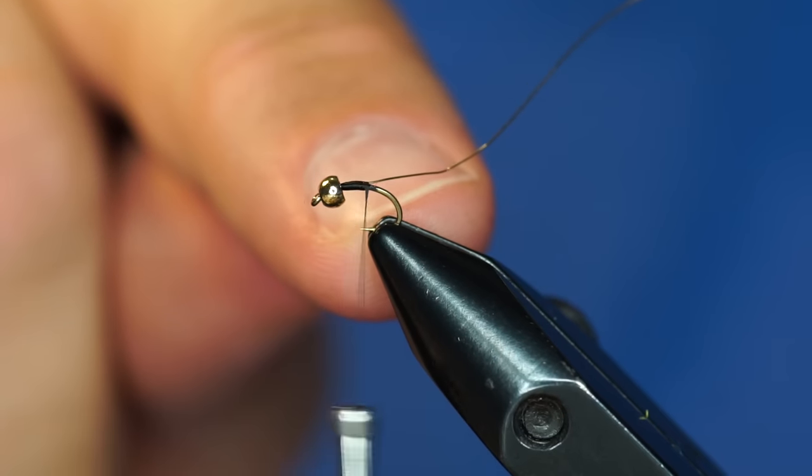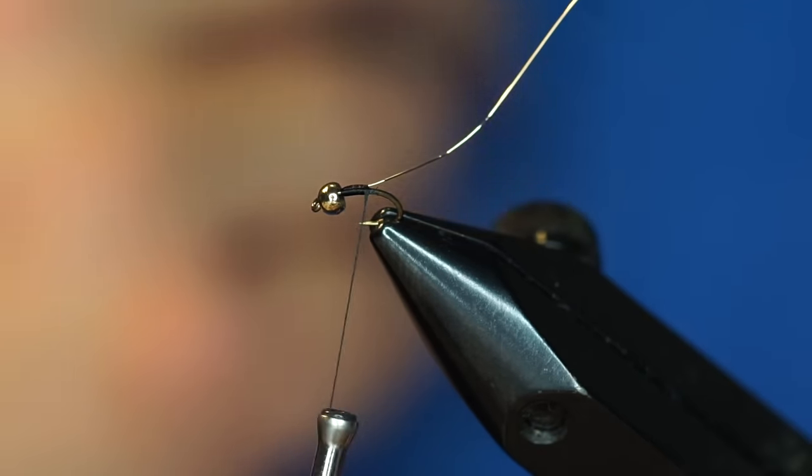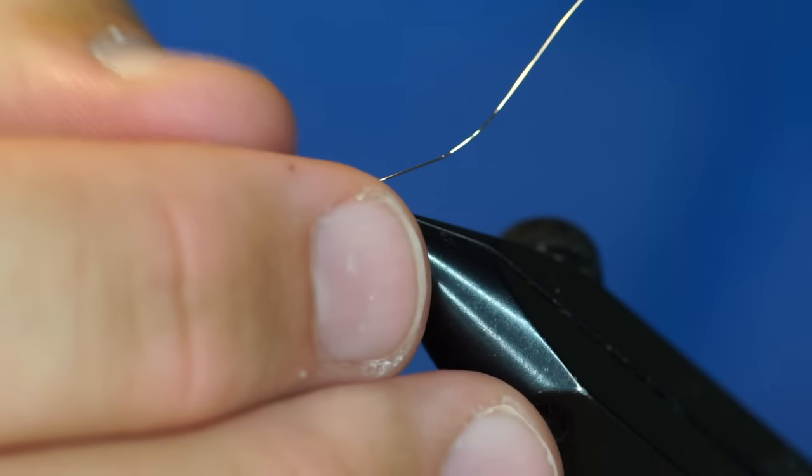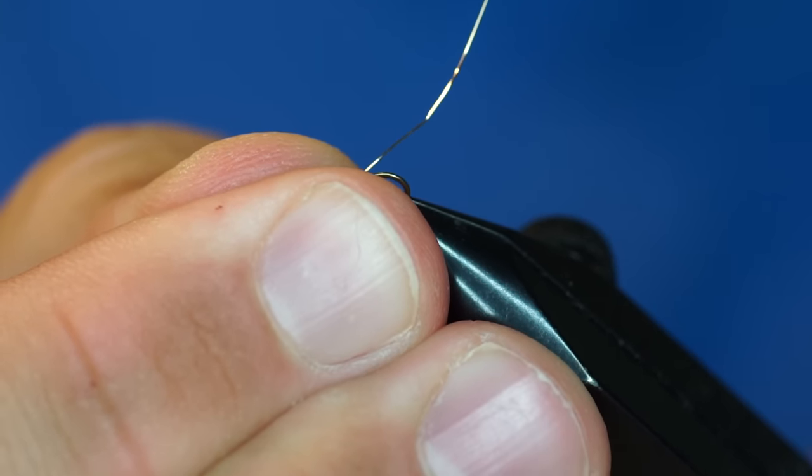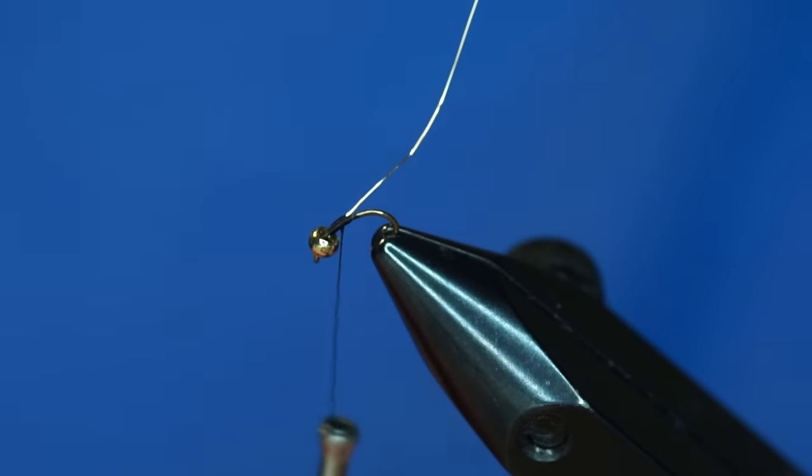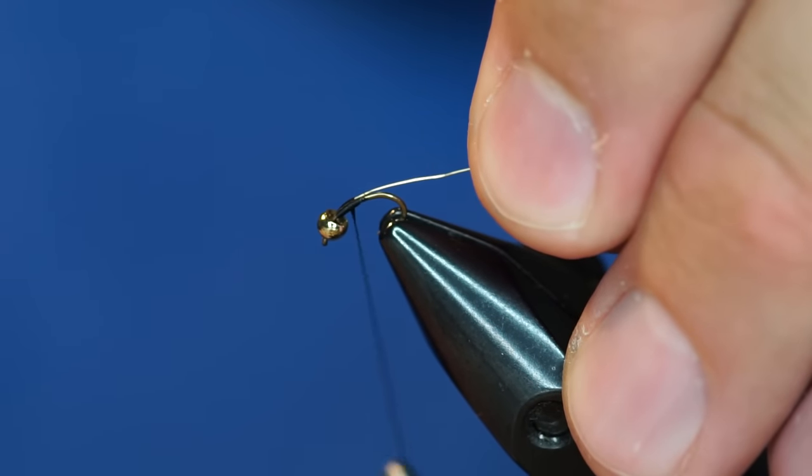It's hard to get back here where your Zebra Midge is going to go. So the easiest way to get back there is just to adjust your hook in the vise up just a little bit, like this, so that you can get it where you need to be.